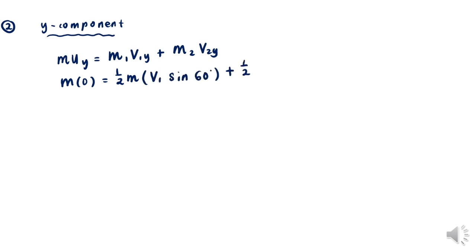Now let's solve for the Y component. For the Y component, we apply the principle of conservation of momentum. We have M times Uy equals M1 times V1y plus M2 times V2y. Since Uy equals zero, there is no motion involved in the Y component initially, so we let it be zero.